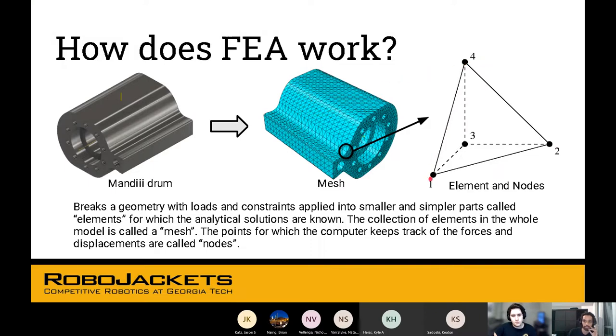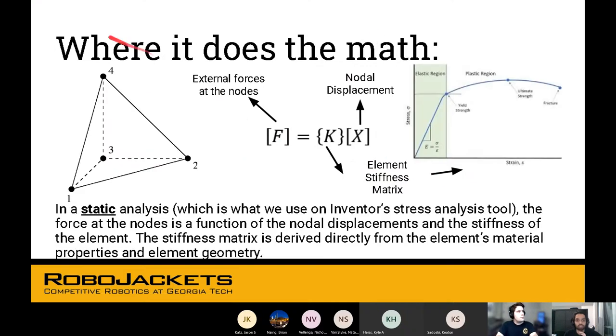At the ends of the elements, these are called the nodes. The collection of all the elements together is called a mesh, and the nodes are the points where the computer does the math. Each element is just considered to be uniform material.